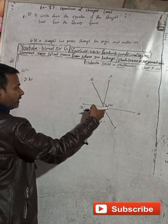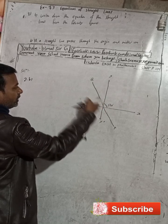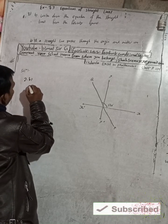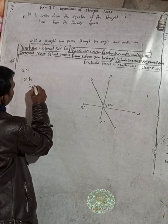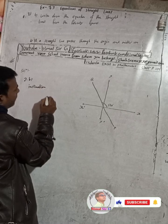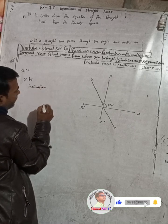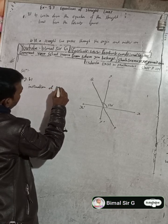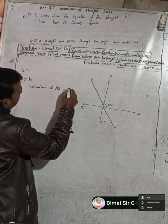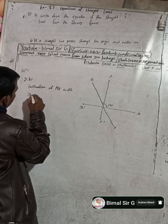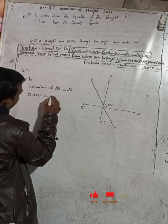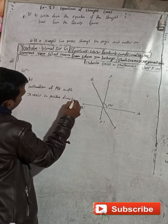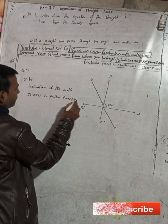You can see this PQ line is making 120 degrees with the X axis. So the inclination of PQ with the X axis in the positive direction is theta.